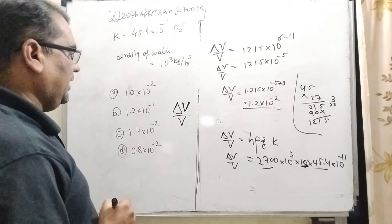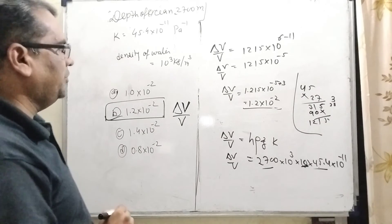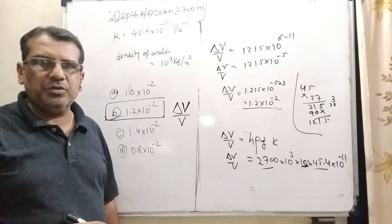So which option is correct? Here, this option, option B is correct: 1.2 × 10^-2. I hope you understood this question.